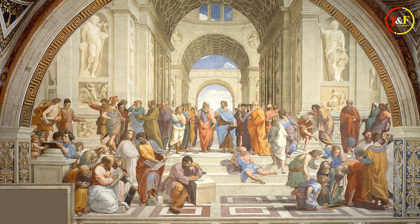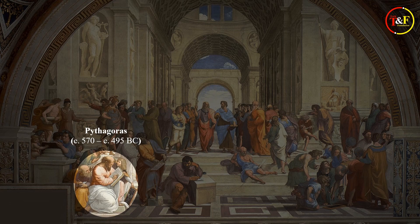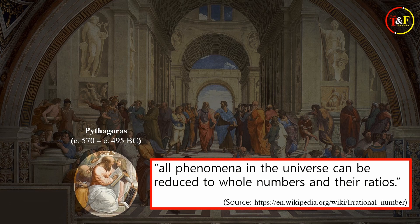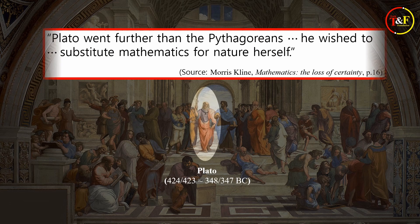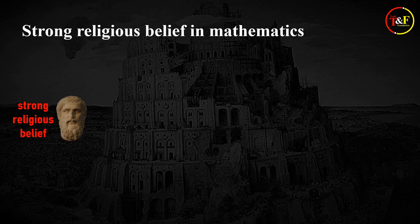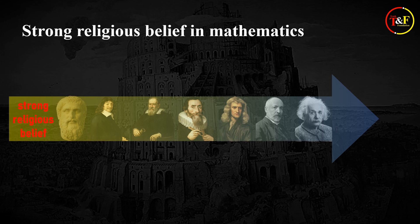As you have seen in the first video titled 'What is the True Nature of Mathematics?', the Pythagoreans were a religious group, and they had a belief that all phenomena in the universe can be reduced to whole numbers and their ratios. However, the former NYU professor Morse Kline said, 'Plato went further than the Pythagoreans — he wished to substitute mathematics for nature herself.' This means they believed mathematics was truer than nature itself. This strong religious belief in mathematics has been passed down from generation to generation through the so-called great mathematicians and scientists.